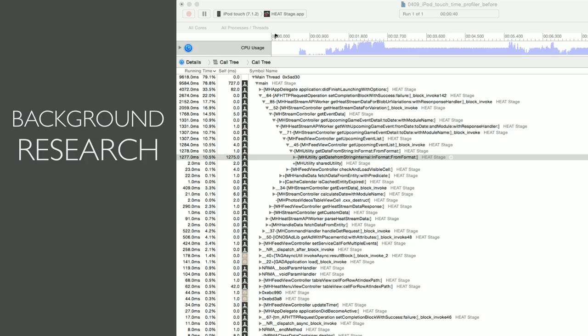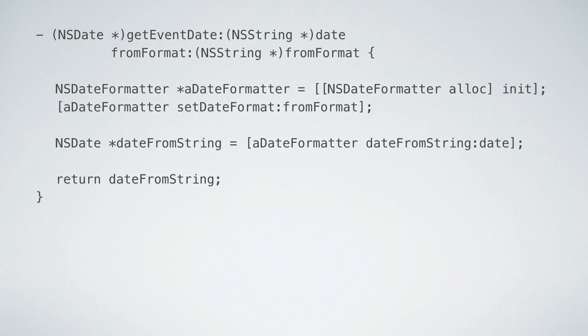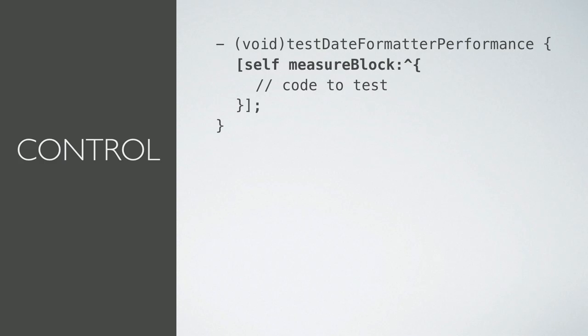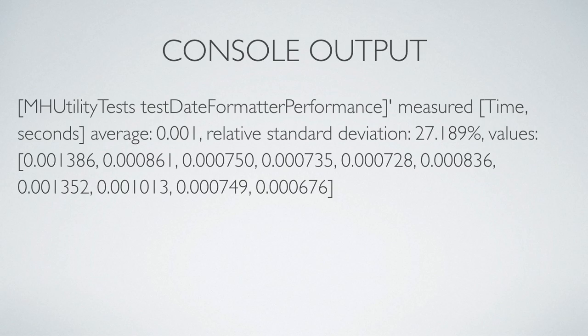Let's jump to the code and see what's going on. Here's an abbreviated version of the method. At first glance, nothing really seems to be out of the ordinary. But remember, this method gets called often, and I seem to recall someone saying that creating date formatters is expensive. My hypothesis is that if we only create one instance of our date formatter and reuse it, then our overall performance will improve. But before we go making changes, we need a control. For this test, we can use another feature of XCTestCase — the measureBlock method. When this particular test runs, the code inside the block will be executed a total of 10 times, and the duration of each iteration along with some statistics will be printed out to the console.